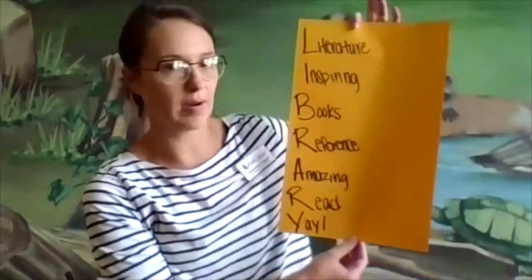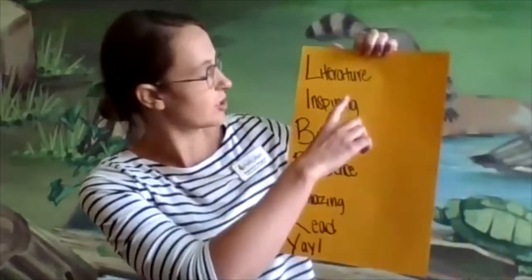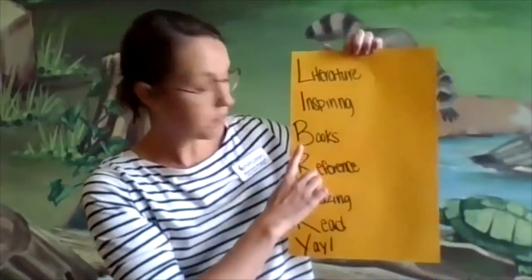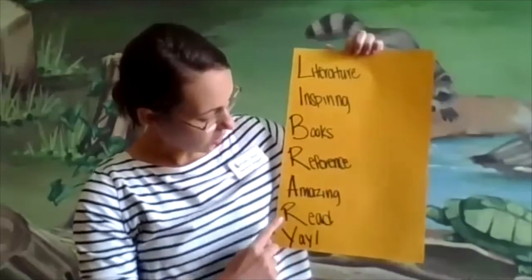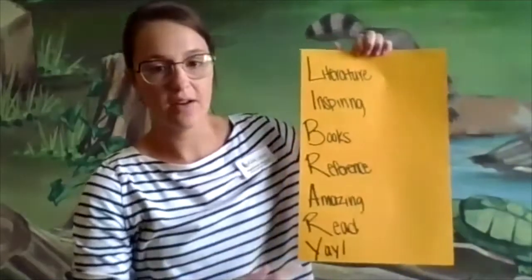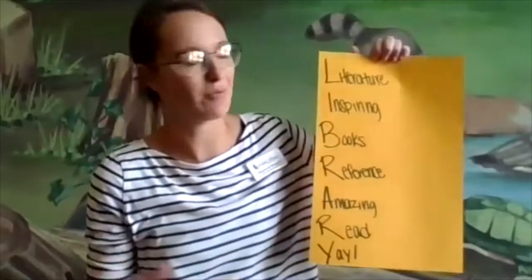Welcome back! I hope everyone had a blast writing their own acrostic poem. I created my own — I went with the theme of library. So for L-I-B-R-A-R-Y: L for "literature," I for "inspiring," B for "books," R for "reference," A for "amazing," R for "read," and Y for "yay!" — because I just love the library. That is my acrostic poem. I hope you all had a lot of fun with that. Now you can write acrostic poems about anything!